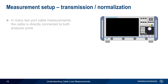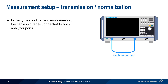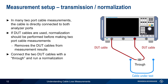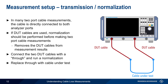In most two-port cable measurements, the cable under test is simply directly connected to both analyzer ports. If however DUT cables are used to connect the cable under test to the analyzer, then a normalization should be performed to remove the influence of the DUT cables from the measurement. To perform a normalization, the two DUT cables are connected using a THRU. After normalization is complete, the THRU can be replaced with the cable under test and measurements can be performed.